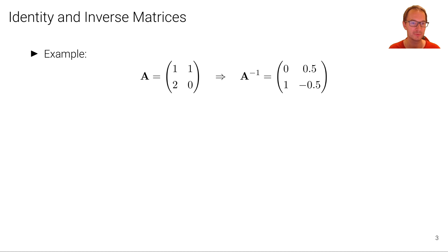Let's finally look at an example. Consider this matrix A with elements 1, 1 and 2 and 0. The inverse of that matrix I have obtained with pen and paper using Gauss elimination, which we don't discuss here. And the inverse of this matrix is this one here with the element 0, 0.5, 1 and minus 0.5.